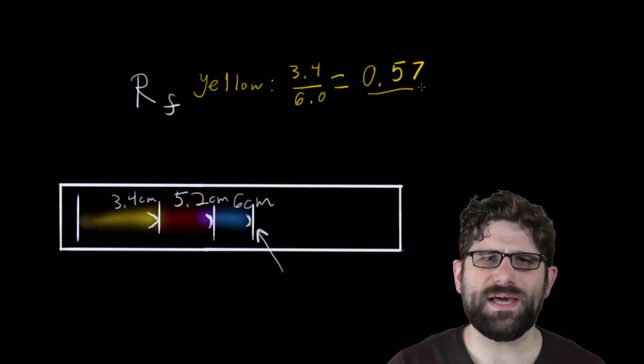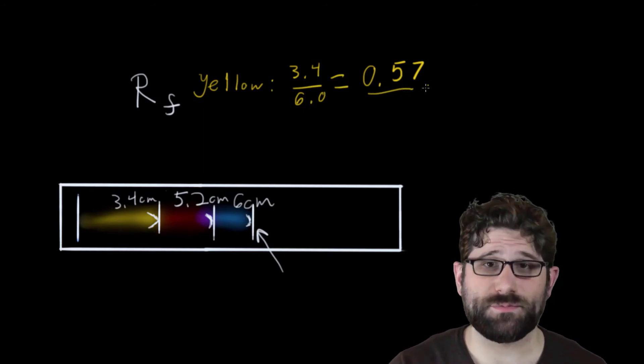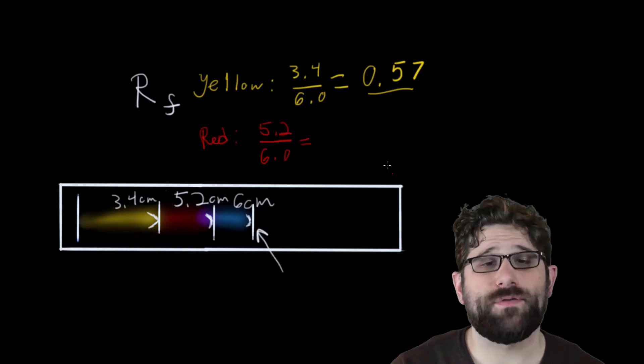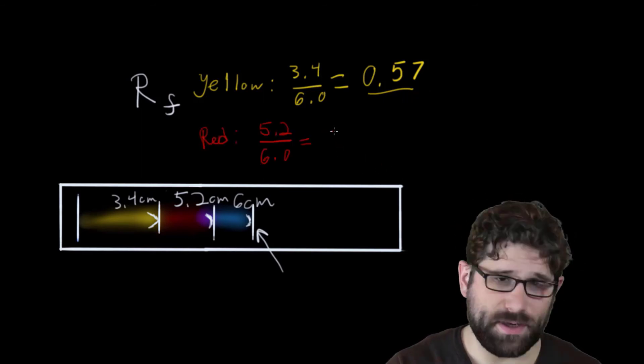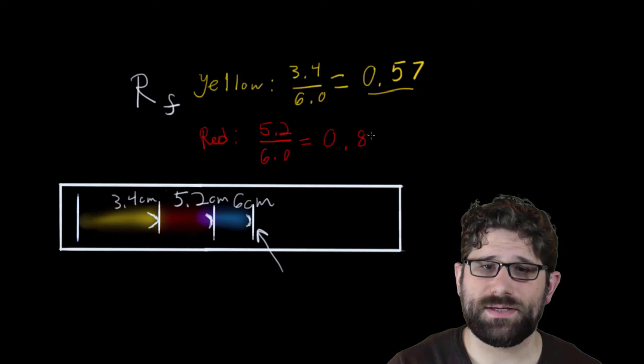Now, when I do the RF value of my red pigment, I get a value of 0.87.